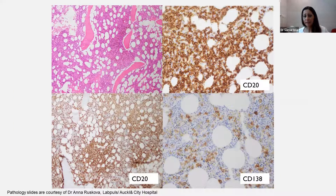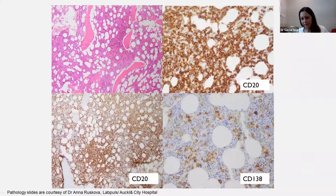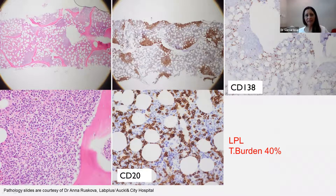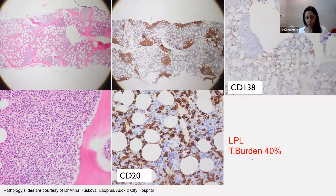These are the specialist stains. We know this bone marrow biopsy has lots of those cells. They are lymphoid cells, CD20 positive, and lymphoplasmacytic because they are CD138 positive. These are names of special stains that help us diagnose patients and confirm they have Waldenström's macroglobulinemia. We also look at the disease burden — how much of the bone marrow has normal cells versus abnormal lymphoplasmacytic cell infiltration. In this case, the disease burden or tumour burden is 40%.